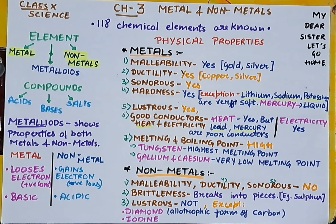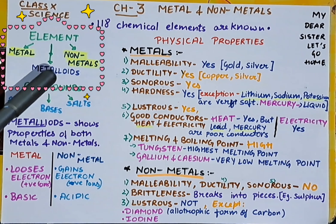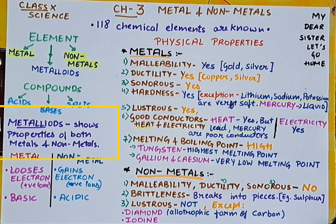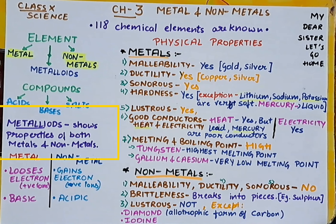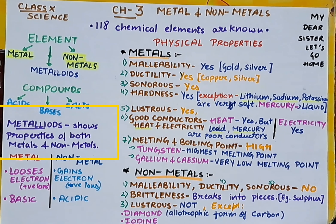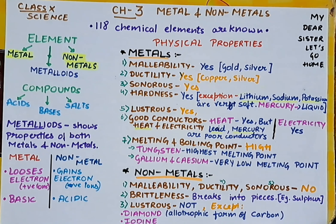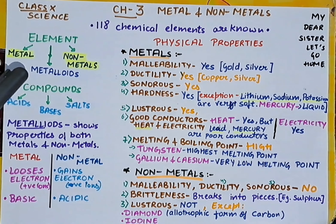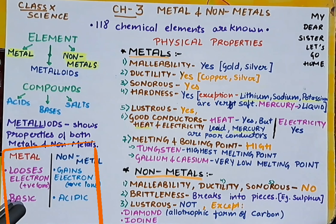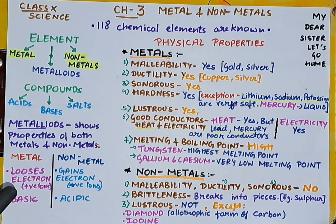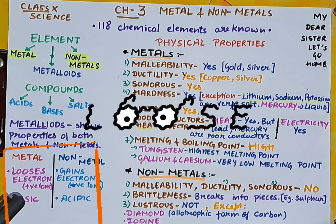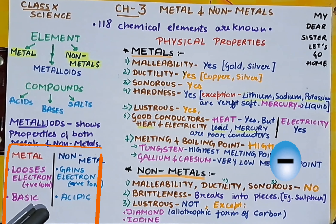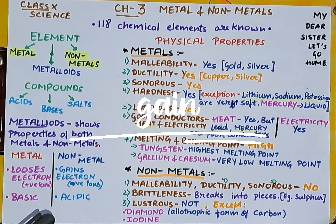Now we are going to discuss metals, non-metals, and metalloids. Metalloids show properties of both metals and non-metals — they are 50-50. A basic difference is: metals lose electrons, forming positive ions, and are basic; whereas non-metals gain electrons, forming negative ions, and are acidic.